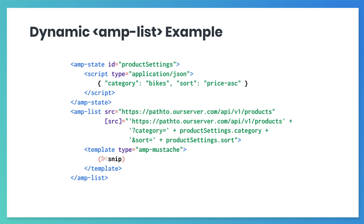This example shows how to combine amp-list with property bindings and state variables. The first time the page loads, we load all of the products. The state variables in product settings update when the user selects different options. Then the source property updates using the values of the updated state variables. The AMP List component reaches out to the updated source address to download new data. The templates process that new data to create new HTML, and finally, that new content replaces the old content on screen.